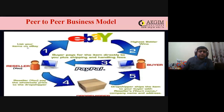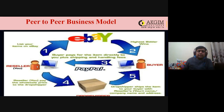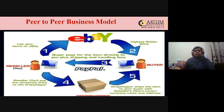In the peer-to-peer eBay process: first, the reseller lists the item on eBay; the highest bidder wins; the buyer pays directly to the reseller plus shipping and handling; the reseller selects a drop shipper; and the drop shipper ships the item to the buyer under the reseller's name, company name, and address.